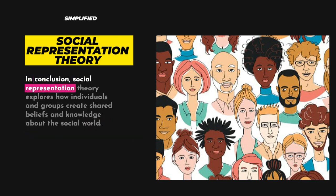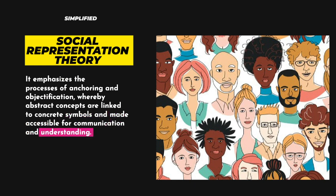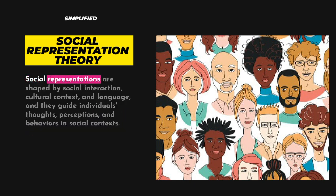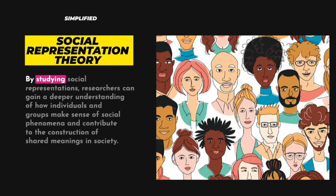In conclusion, social representation theory explores how individuals and groups create shared beliefs and knowledge about the social world. It emphasizes the processes of anchoring and objectification, whereby abstract concepts are linked to concrete symbols and made accessible for communication and understanding. Social representations are shaped by social interaction, cultural context, and language, and they guide individuals' thoughts, perceptions, and behaviors in social contexts.